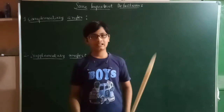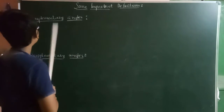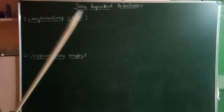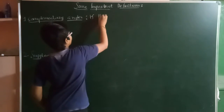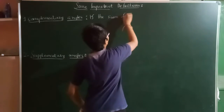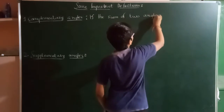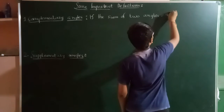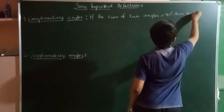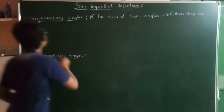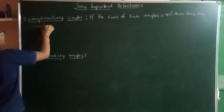Hi friends, today let's see some important definitions. First, complementary angles. What are complementary angles? If the sum of two angles is equal to 90 degrees, then they are said to be complementary angles.